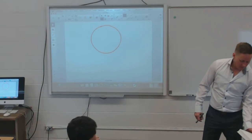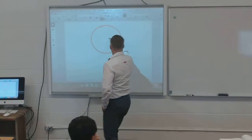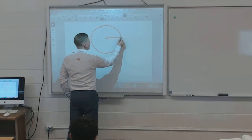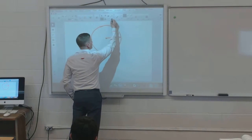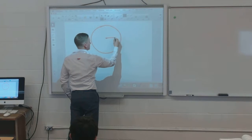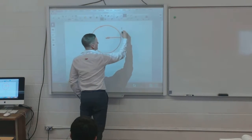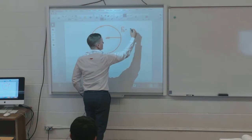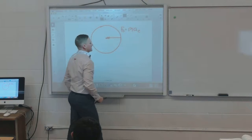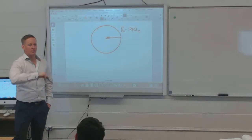An object kept going in a circle is maintained in that direction using centripetal force. If you calculate centripetal force, it's still mass times acceleration, but it's the acceleration of the object moving around the circle.